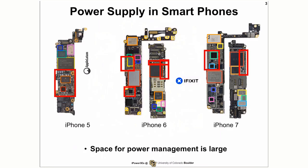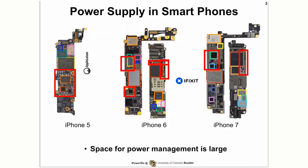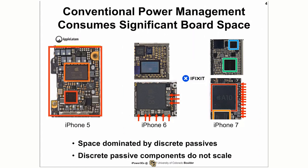This slide shows how power management is done in today's smartphones using iPhone 5, iPhone 6, and iPhone 7 as examples. They also represent a similar trend in many Internet of Everything devices. As you can see on these iPhone boards, the power management areas circled in red rectangles here are actually occupying a significant area of the board. Now if we zoom in further, we'll see that the majority of these areas for power management units are occupied by the discrete passive components.